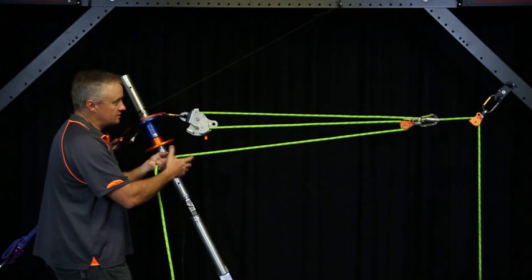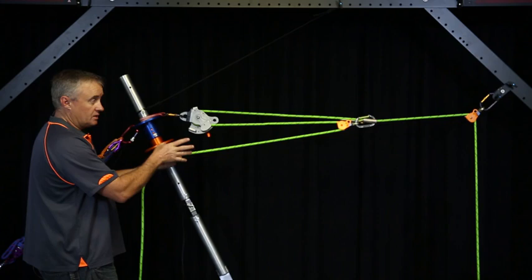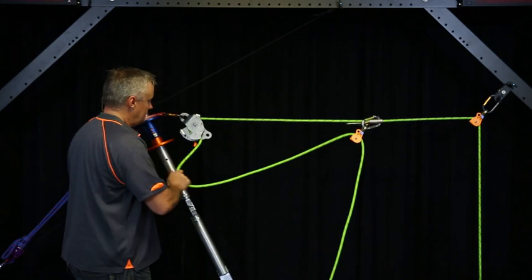Now the MPD has a bearing sheave inside there. So if we haul up on this, we can see that runs through nice and smooth. And I get the same mechanical advantage as I had before.